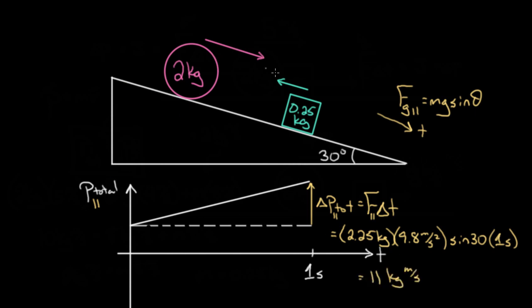So this system would gain 11 units of momentum. That doesn't tell you who's going to get it. It's not like the 2 gets all of it or the 0.25 gets all of it, but the total system, if you watched for a second while it's on this ramp, frictionless ramp, it would increase its momentum. It'd be changing its total momentum because there was an external force.